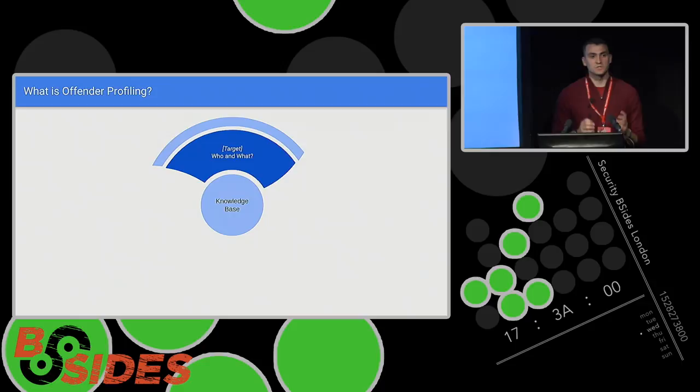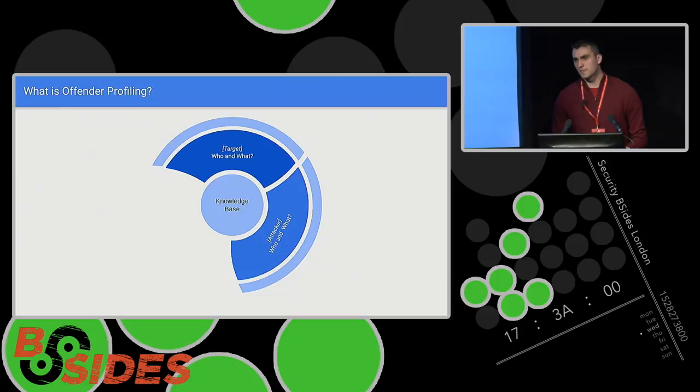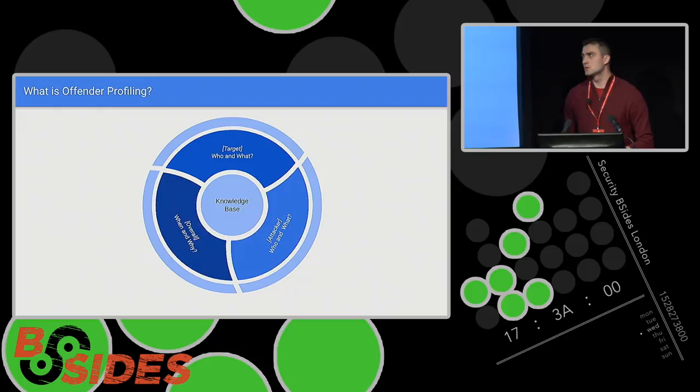To build that knowledge base, we also need information on the attacker — again, the who and the what. Who was the attacker? Were they an individual, a group, were they state-sponsored? And what attack vector was used? Finally, to build that profile, we need some general and overall information: when did this attack occur, and why did this attack occur? All of that information allows us to build that bigger picture.